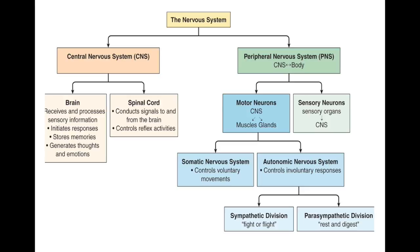That wraps up the nervous system. Be sure to go back and review all the parts of the brain and spinal cord for the CNS, as well as the cranial nerves and spinal nerves for the PNS. Then consider the motor and sensory neurons and how motor neurons break into the somatic and autonomic nervous systems. Complete your ANS written assignment, which is due for a grade and will ask questions to let you analyze your knowledge on the sympathetic and parasympathetic divisions of the autonomic nervous system.